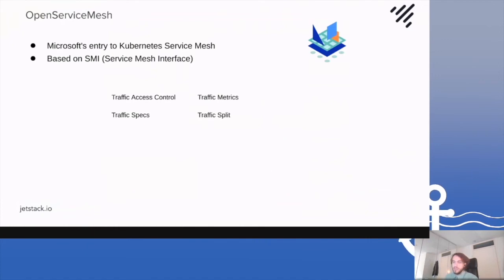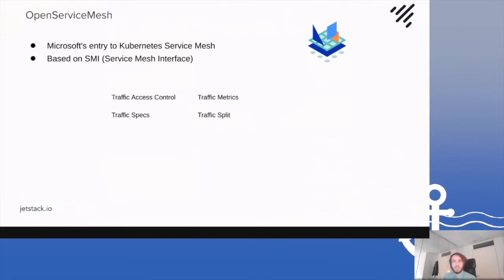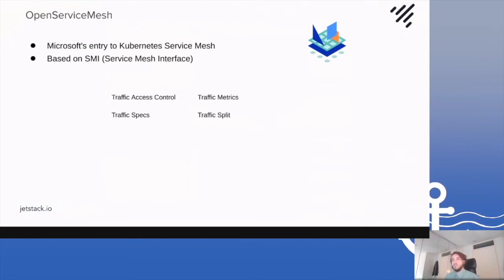The first to integrate was OpenServiceMesh — Microsoft's addition to the service mesh space. It's considered a simpler approach to doing service mesh, being easier to maintain. It's based upon the Service Mesh Interface, or SMI, which is essentially a set of configuration specifications, similar in vein to something like CNI or network policy, where you have a consistent configuration that can be implemented on many different service meshes — meaning your infrastructure configuration can be more transferable between implementations.